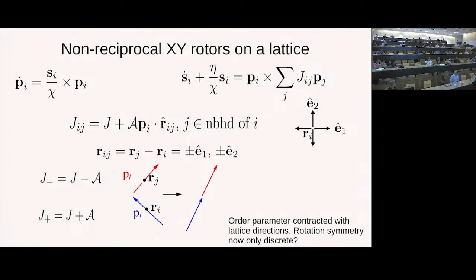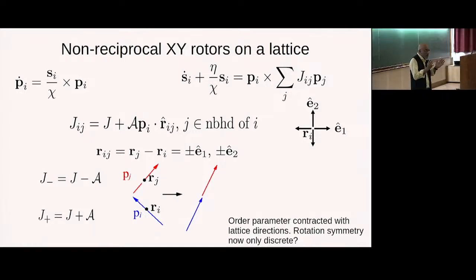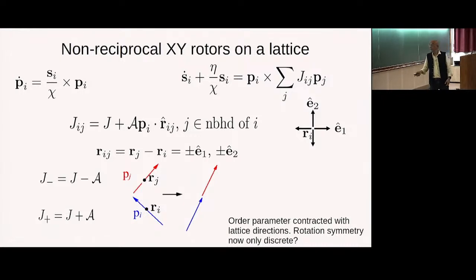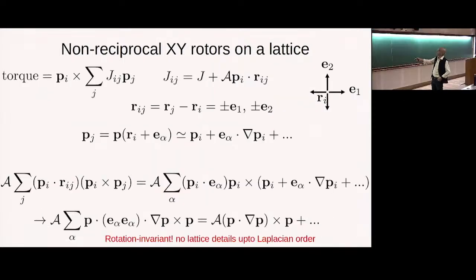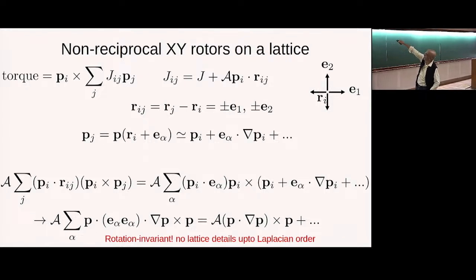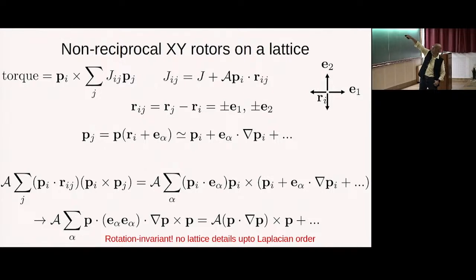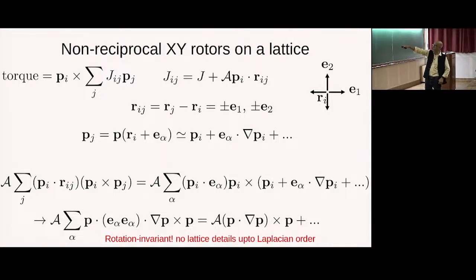We're not introducing left-right asymmetry; it's not a chiral model. You can just take the non-symmetric part of the torque: Pi cross J_{ij} P_j summed over j, where J_{ij} has the potentially non-symmetric piece. Expanding it out gives P dot r times P cross P, and the r_{ij} vector is summed over the four nearest-neighbor vectors. Writing P_j as P_i plus a lattice vector dotted into the gradient of P, and summing over neighbors the tensor e_alpha ⊗ e_alpha, that becomes the unit matrix. Even at diffusion order you're still isotropic; you only start to see lattice features at three orders in gradients.